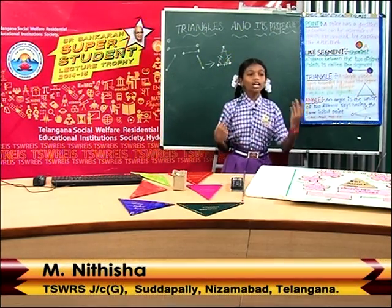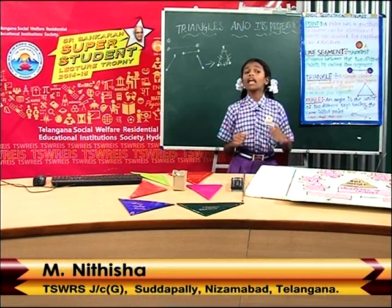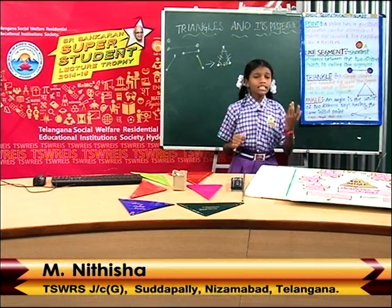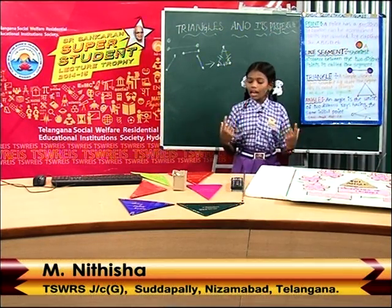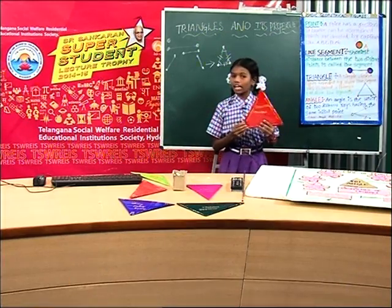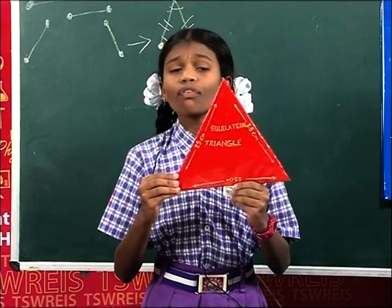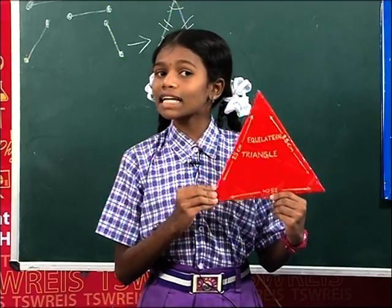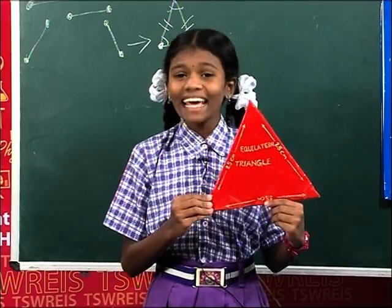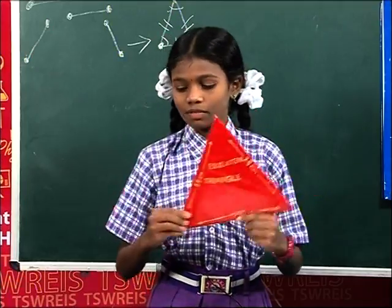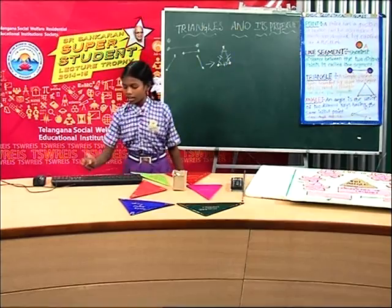They are the equilateral triangle, isosceles triangle, and scalene triangle. Equilateral triangle means in a triangle, if all three sides are equal, it is called an equilateral triangle. Let us see on the screen.